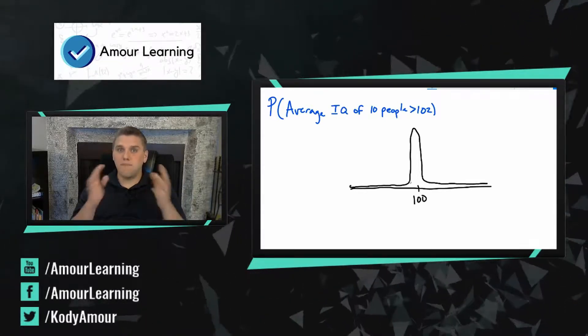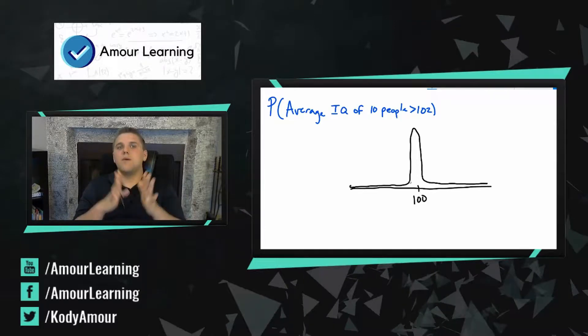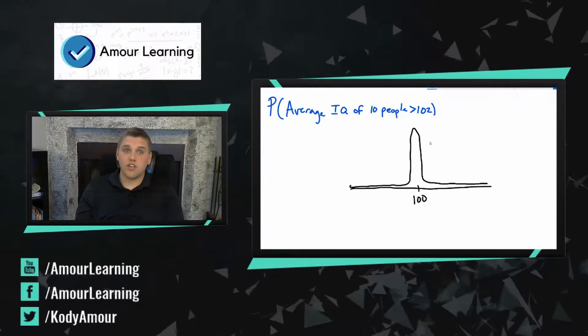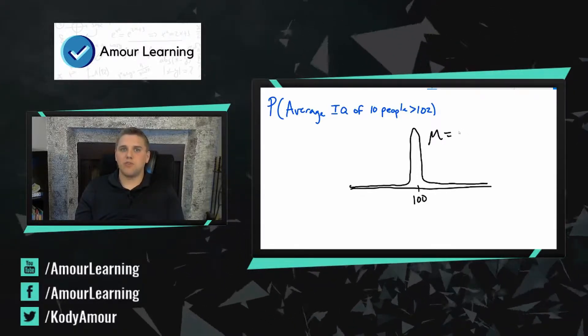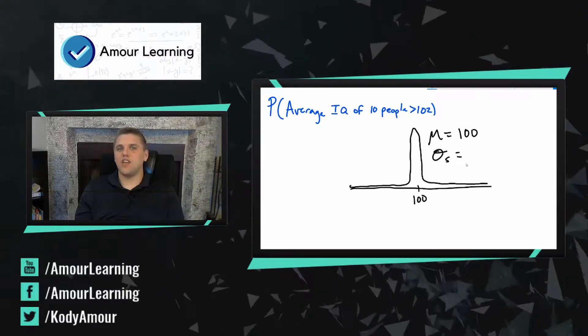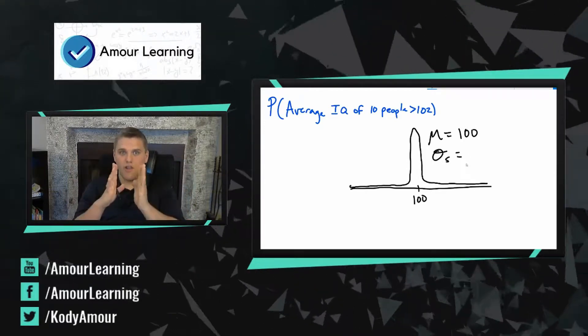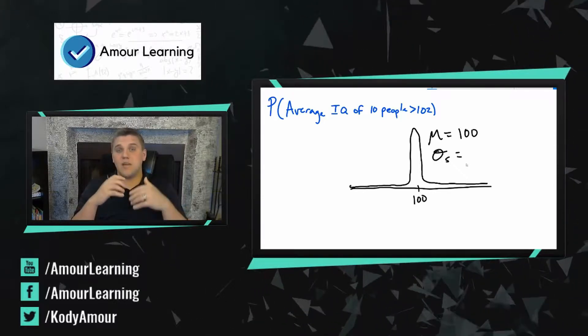What's more likely is that your average of 10 people would be really close to 100. So in this case my bell curve looks really squished because my average is still 100. I should expect to see that the average of these 10 people is really close to 100.